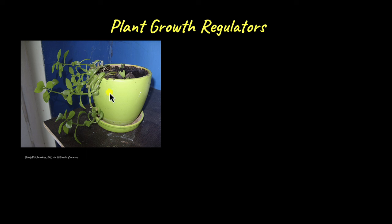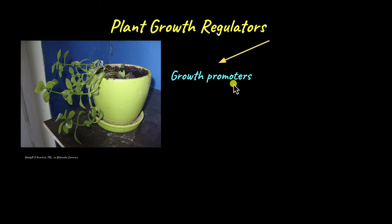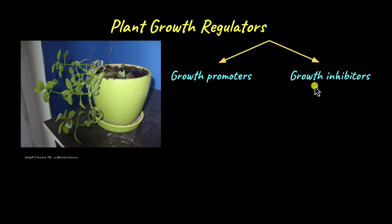The substances that regulate the growth of the plant are known as plant growth regulators, and the growth may be either promoted by growth promoters or inhibited by growth inhibitors. By promotion of growth, I mean increasing in the length of the stem, growing of the roots, flowering, etc. And by growth inhibition, I mean prevention of seed germination, inducing the dormancy of seeds, etc.